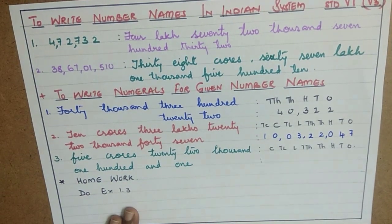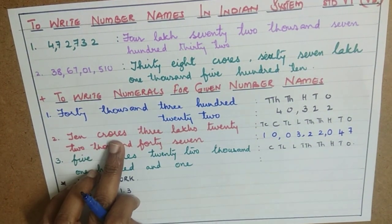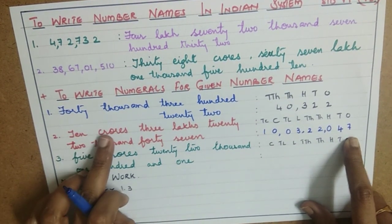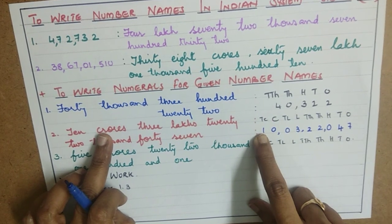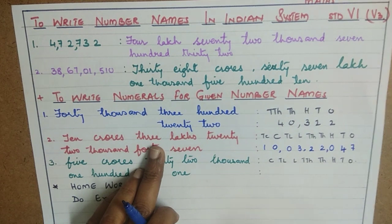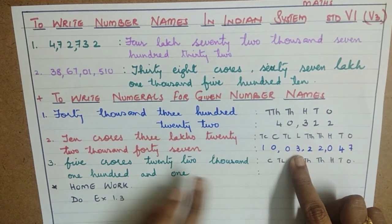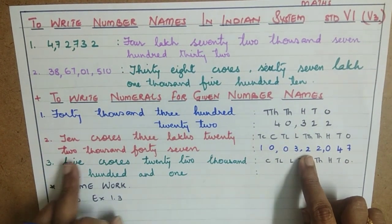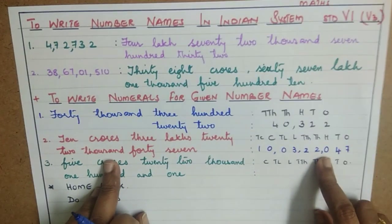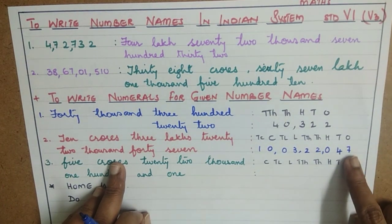Let us do it again to confirm. When it starts with 10 crores, make sure you get a 9-digit number. So: 10 under the ten-crores place, 0 under the crores place. 10 lakhs is not there, so put 0 under 10 lakhs, and 3 under the lakhs place. Next, 22,000: 2 ten-thousands, 2 thousands. No hundreds, so put a 0, and write 47 as 4 tens and 7 ones.